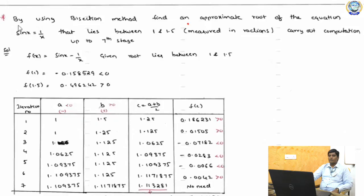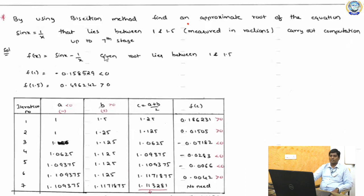The next problem: using the bisection method, find an approximate root of the equation sin(x) = 1/x that lies between 1 and 1.5. The problem gives initial approximations a = 1 and b = 1.5, so no need for trial and error. Note that x must be measured in radians. Carry out computations up to the seventh stage.